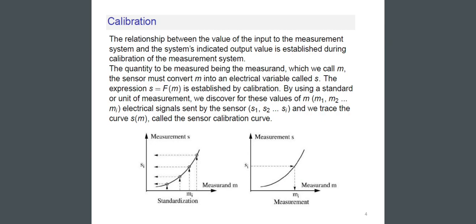The quantity to be measured being the measurand which we call M. The sensor must convert M into an electrical variable called S. The expression S = F(M) is established by calibration. By using a standard or unit of measurement, we discover for values of M: M1, M2, MI, etc.